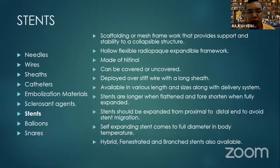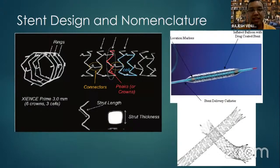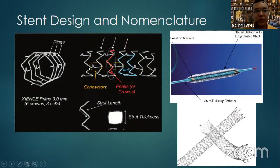A hybrid stent is one where part is covered and part is uncovered — the TIPS stent is the prototype. In TIPS, an artificial tract is created through the hepatic parenchyma from hepatic vein to portal vein; the part within the parenchyma is covered and the part within the portal vein is uncovered. Regarding stent design and nomenclature, the basic building elements are called struts — twigs arranged in a zigzag manner forming the stent framework. Struts vary in length and thickness.